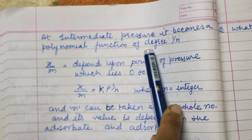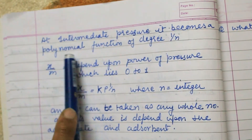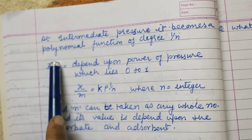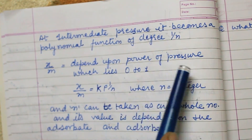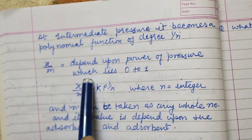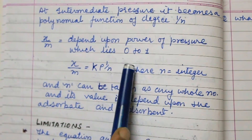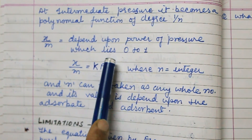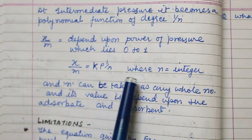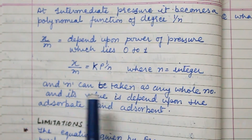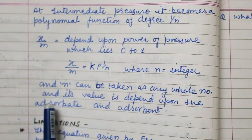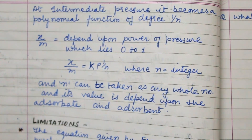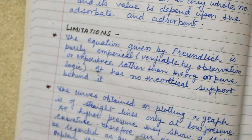At intermediate pressure, it becomes a polynomial function of degree 1/N, where X upon M depends upon the power of pressure which lies between 0 and 1. So X upon M equals K·P^(1/N), where N is an integer — it can be any whole number, and its value depends upon the adsorbate and adsorbent.